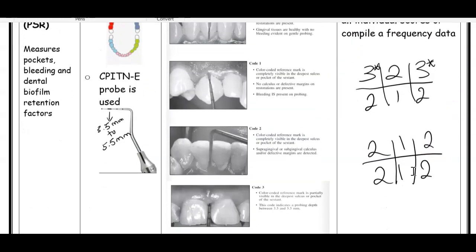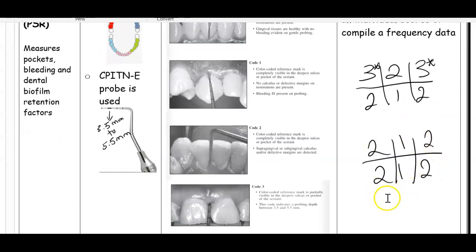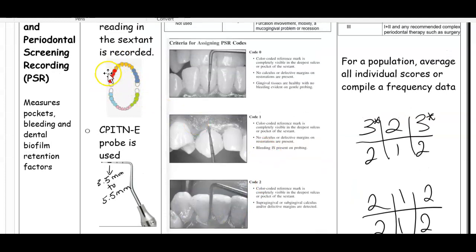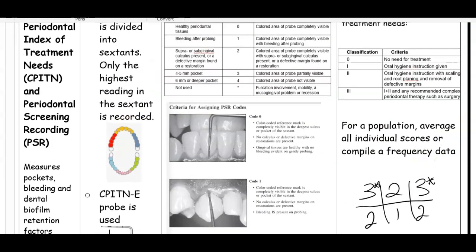PSR is basically a quick way of probing. Of course, full mouth probing is always ideal, but in a community setting where we're seeing many individuals and trying to assess the population and their needs, it's much easier and faster to do a PSR. You just probe each section, record the highest code per section, and then determine their treatment needs.